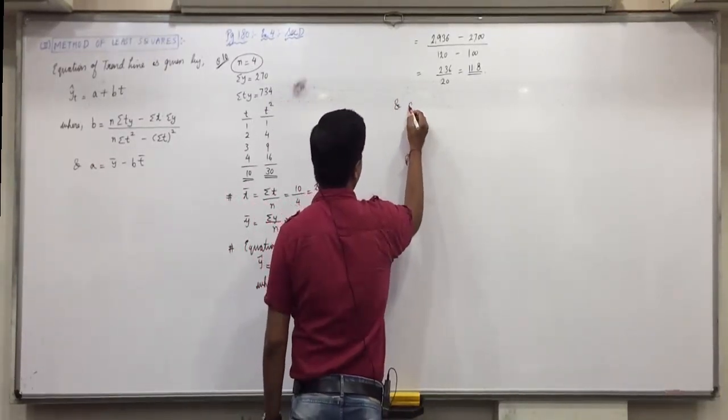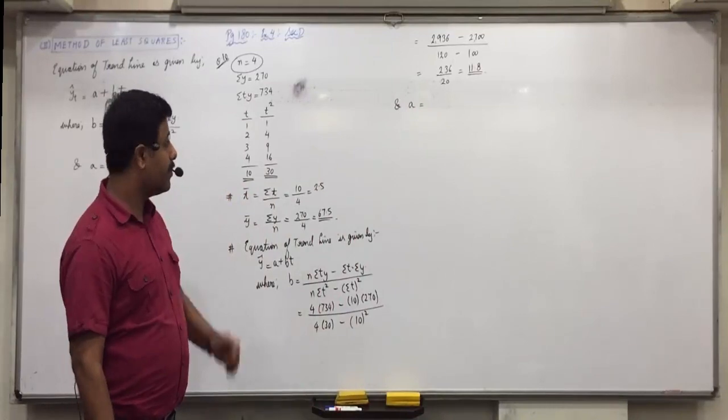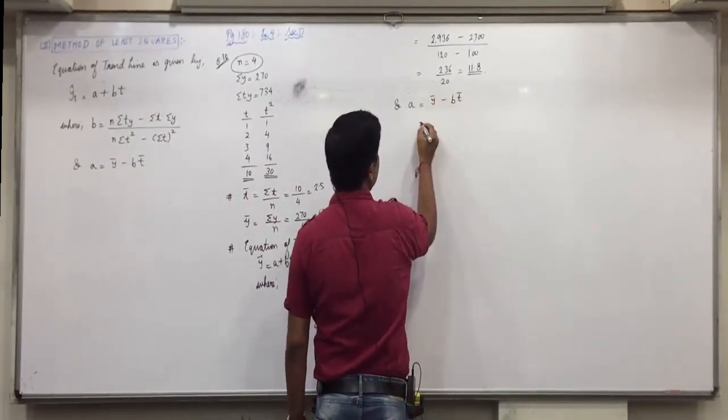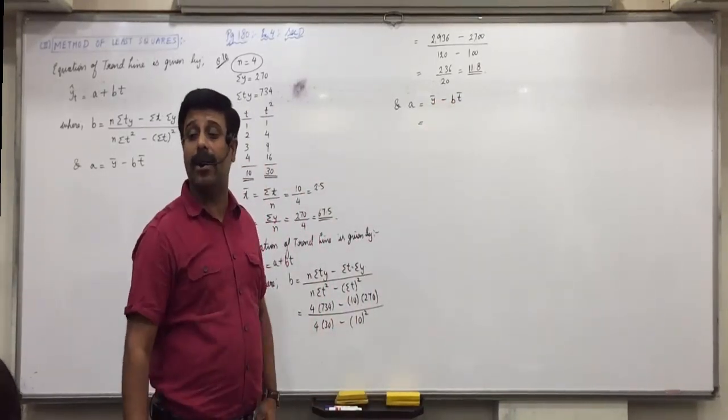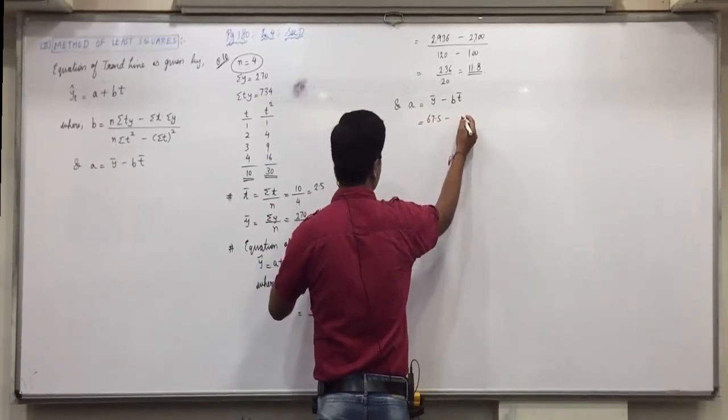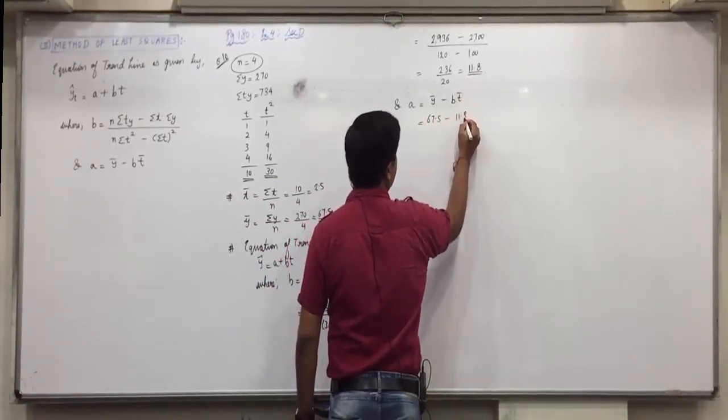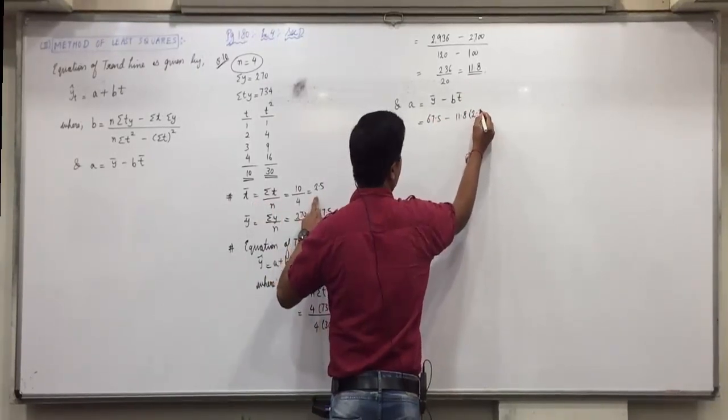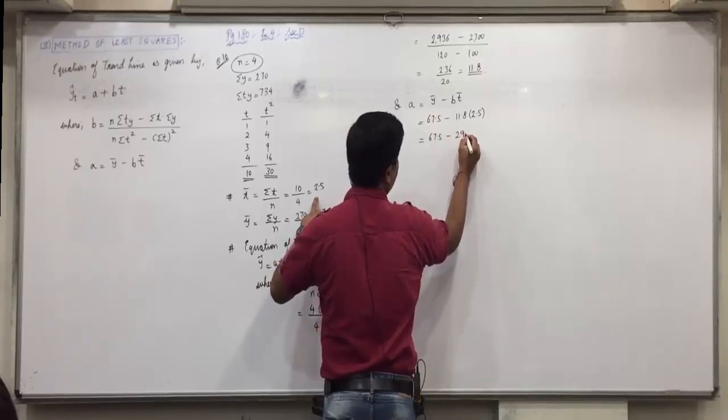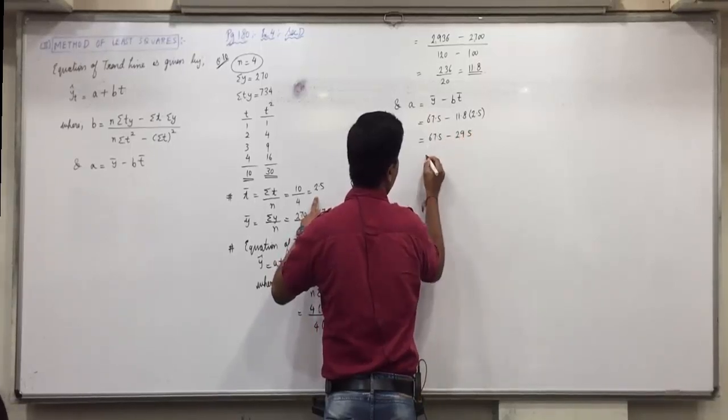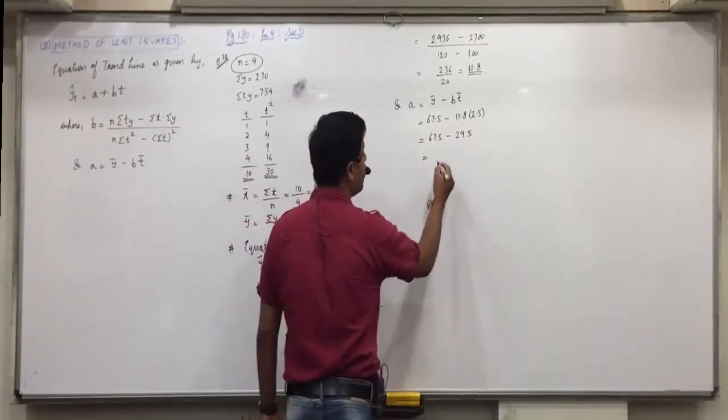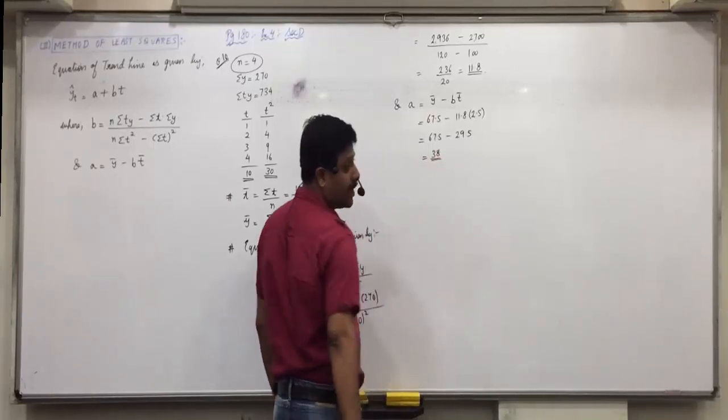And today, y bar. A equals to y bar minus b t bar. Y bar 67.5 minus b 11.8 into t bar 2.5. 29 point. 65.5 minus 11.8 into 2.5 is 29.5. 38. 38, sit down. Is everyone clear of this?